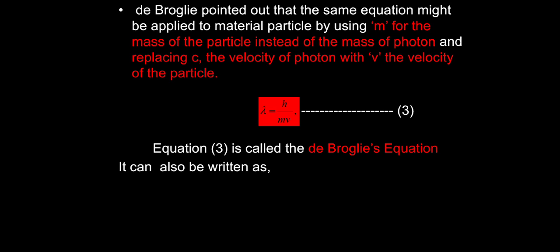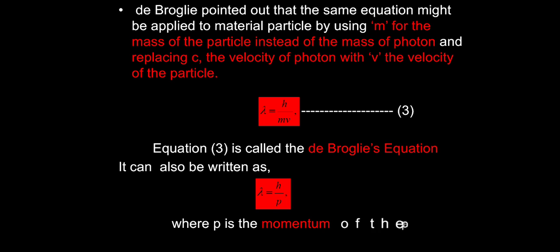This equation can also be written using momentum: since mass times velocity is momentum, we can write mv as p, so lambda equals h by p, where p is the momentum of the particle.